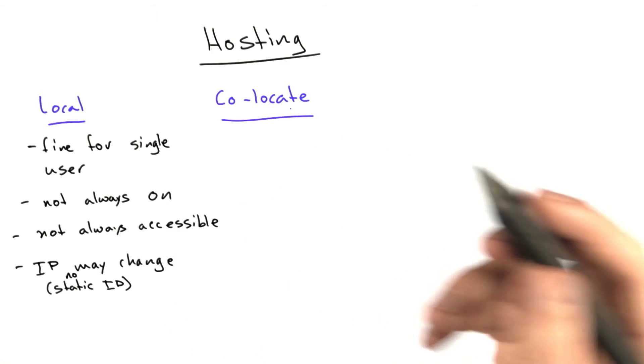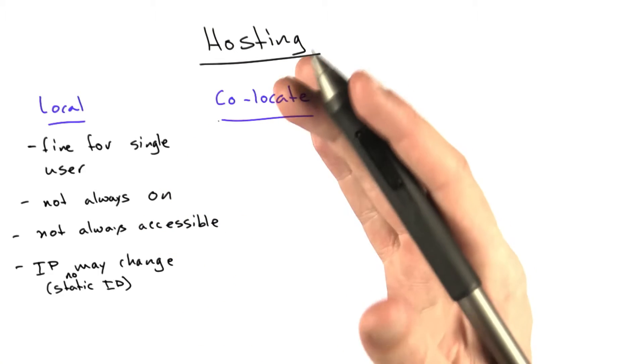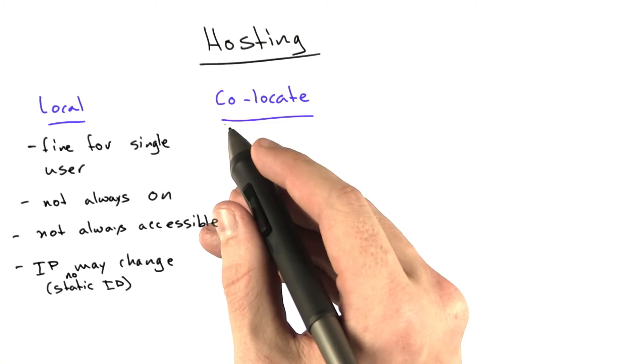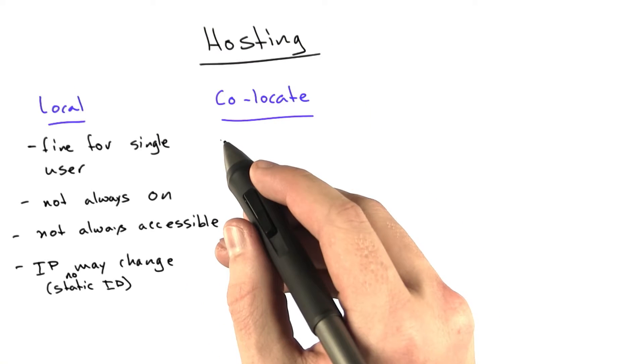The next thing you can do is co-locate. Basically, this means buying space in a rack in a data center. So you still buy your own machines and install them in this data center. Or maybe you buy a whole rack or a whole cage. Basically, a lot of websites do this.